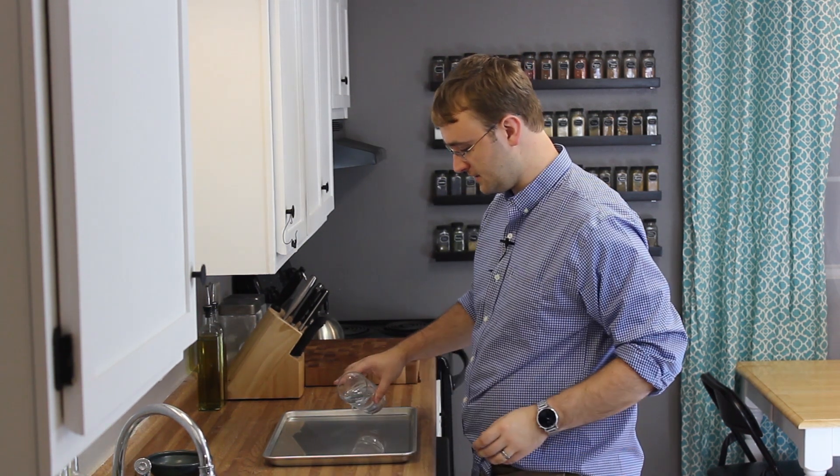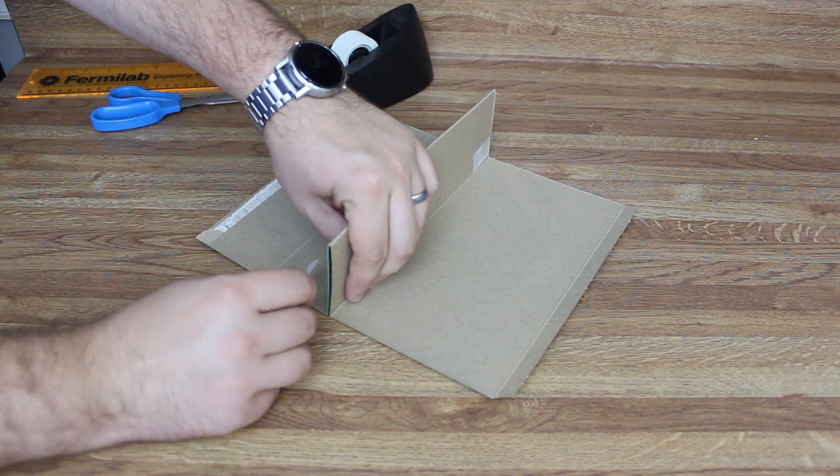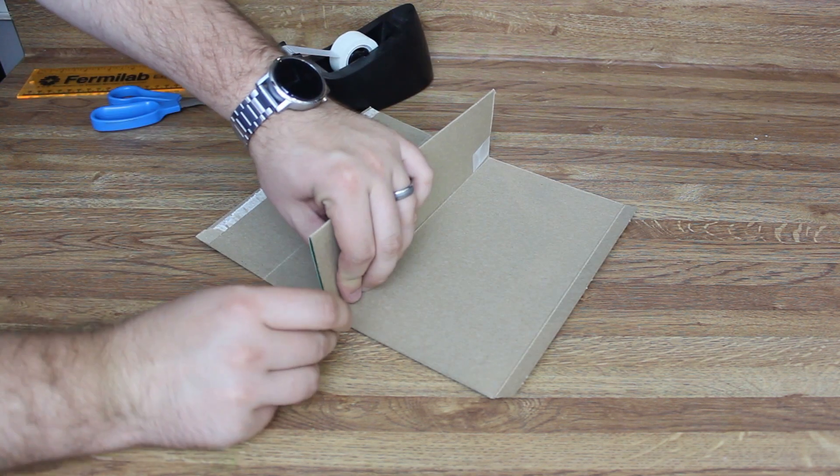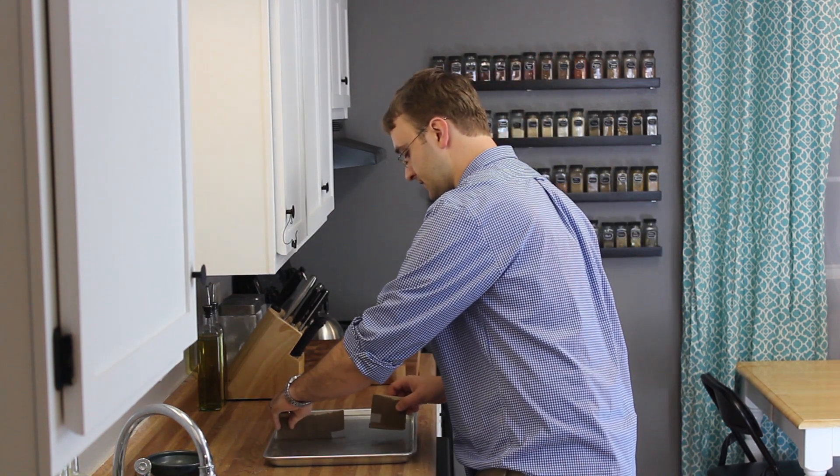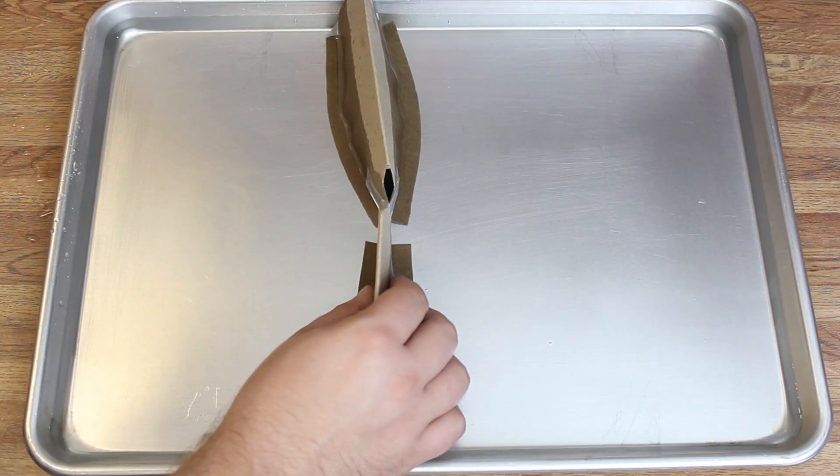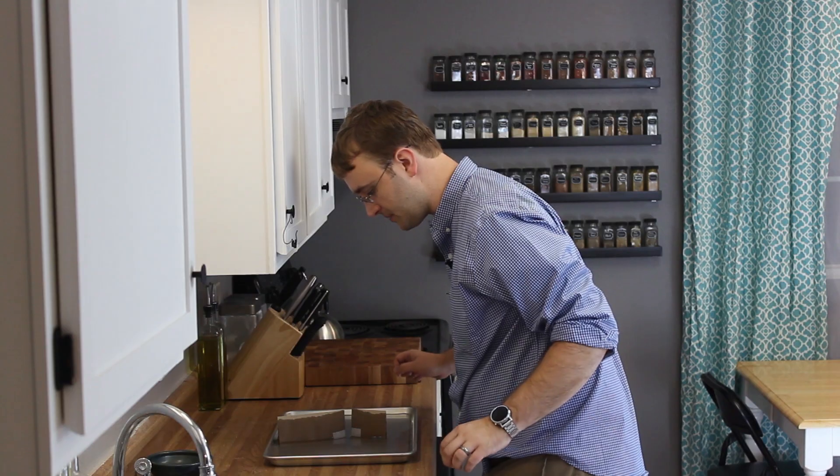You can even try this at home. Just get a baking sheet and fill it with some water. Take a piece of cardboard, fold it in half, and tape the ends together. Then with two little walls, we can just stick them in our vat of water here, creating a little gap in between the two.